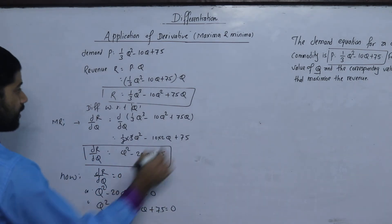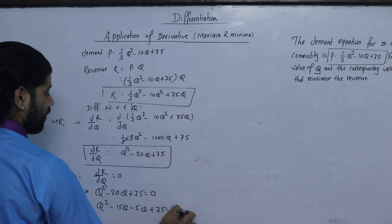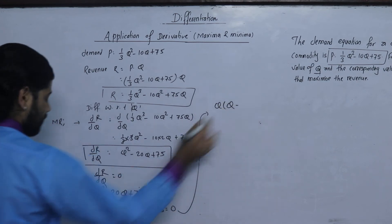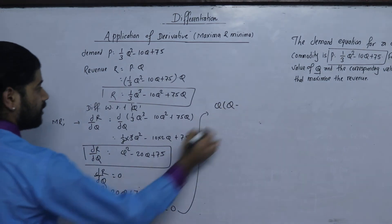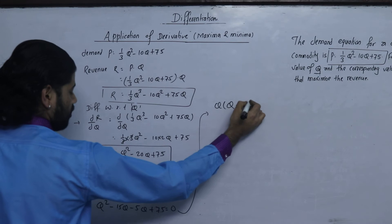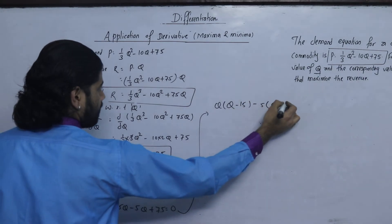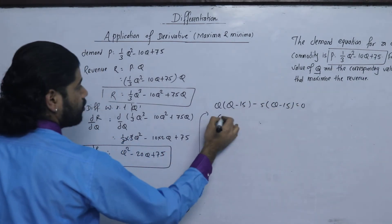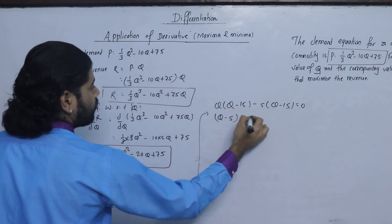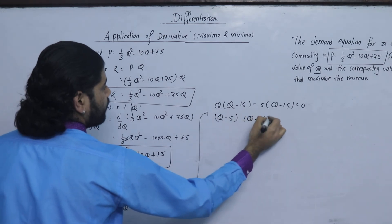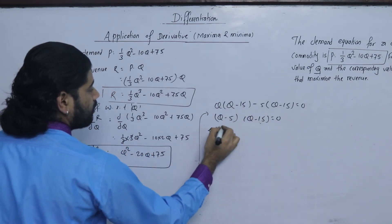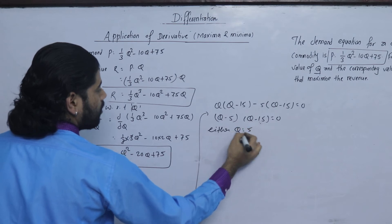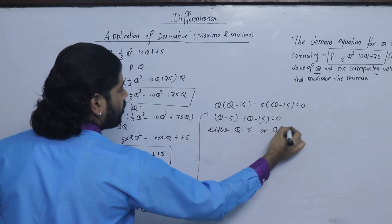Taking Q as common: Q(Q minus 15) minus 5(Q minus 15) equals 0, giving (Q minus 5)(Q minus 15) equals 0. Therefore either Q equals 5 or Q equals 15.